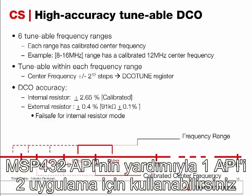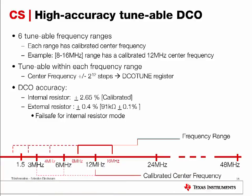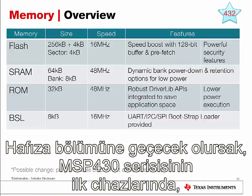With the help of the MSP432 DriverLib API, you can use just one API call to tune your application to any frequency between 1.5 MHz and 48 MHz.